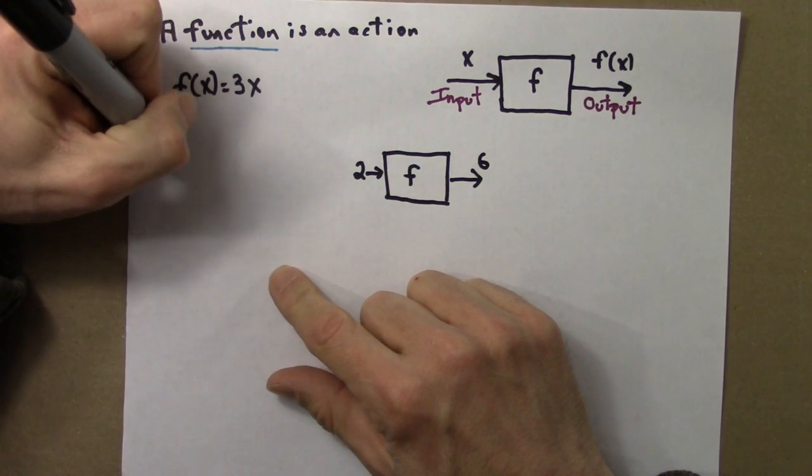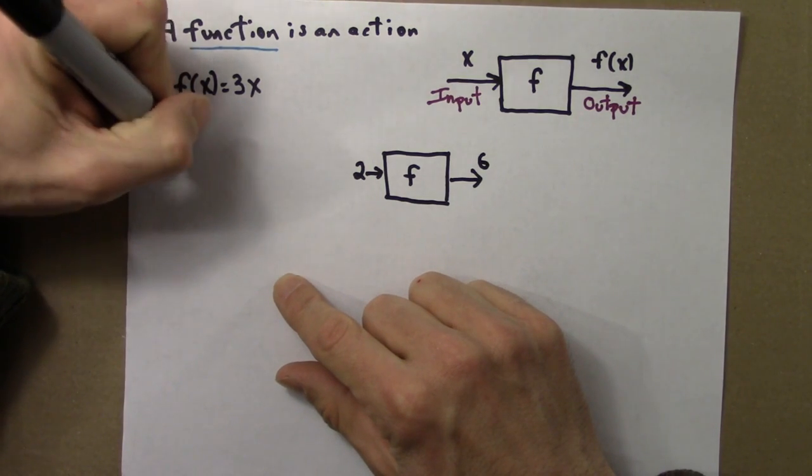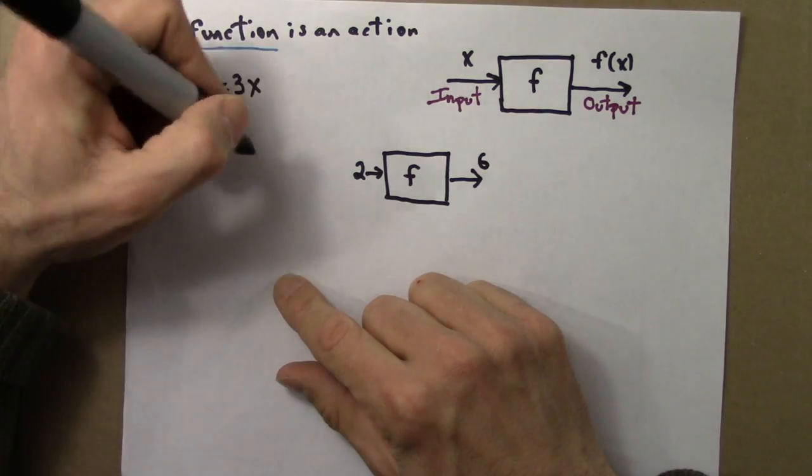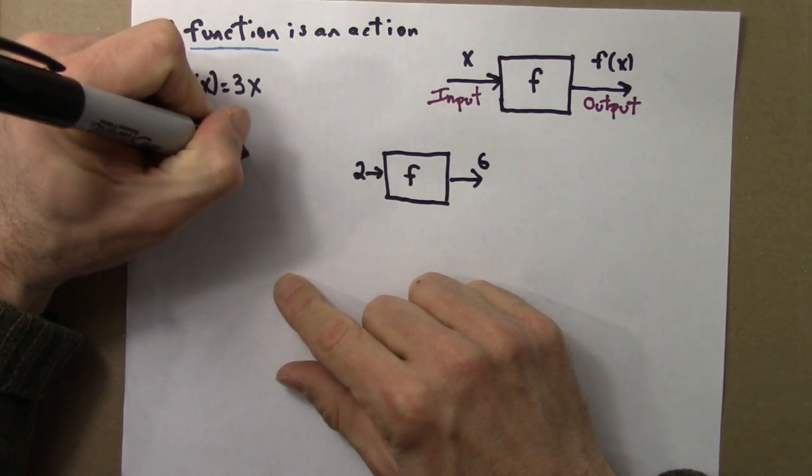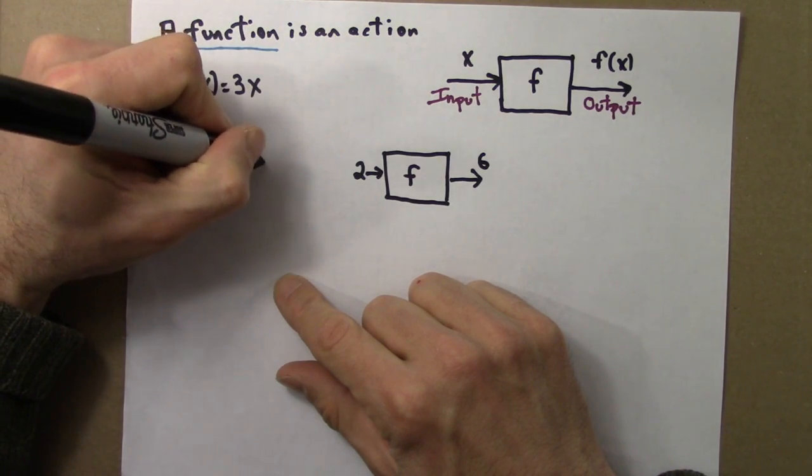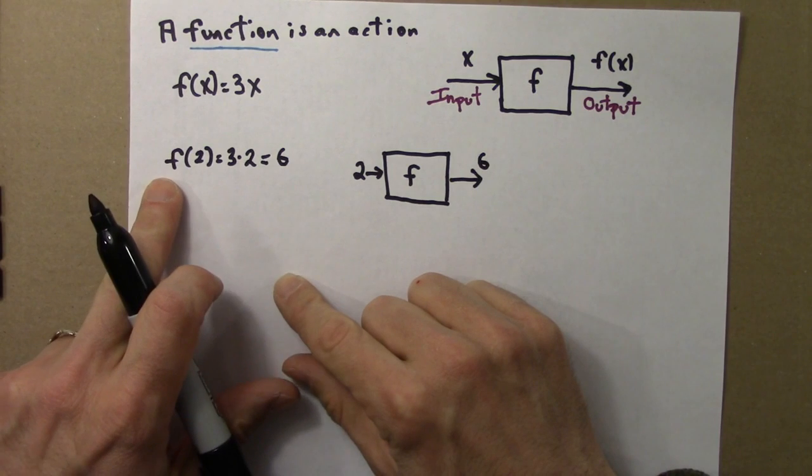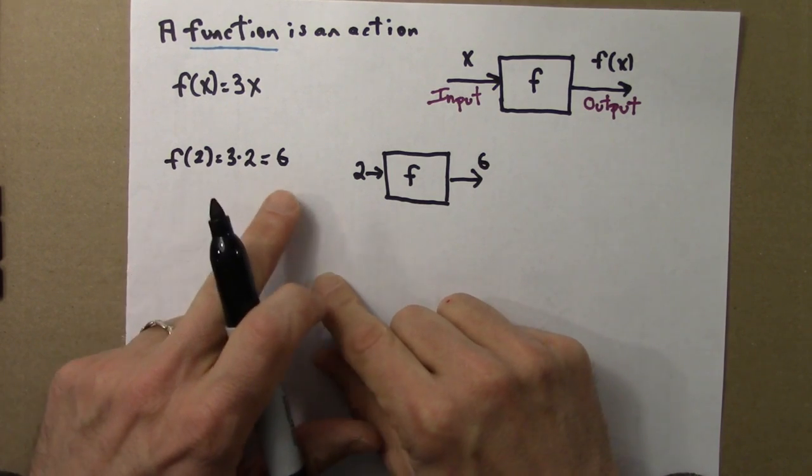Using this notation, let's say f of 2, we replace x with 2, 3 times 2 is 6. So we'll say f of 2, f acting on the number 2, gives the output 6.